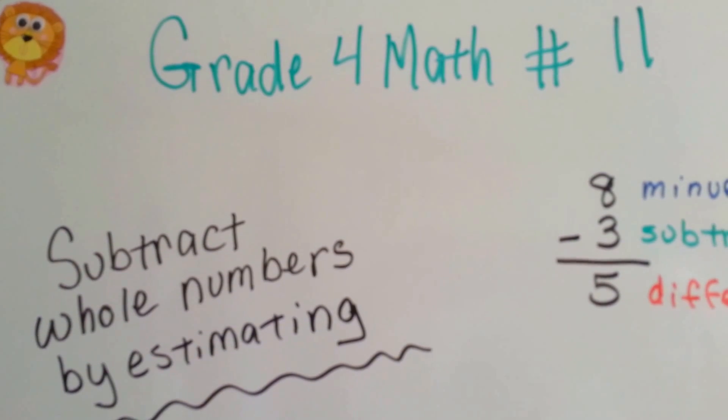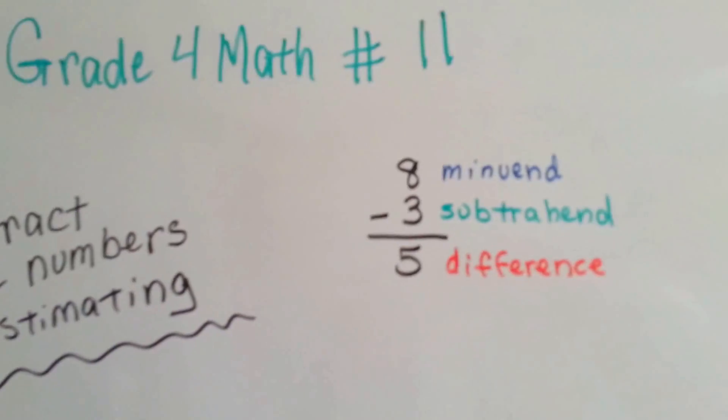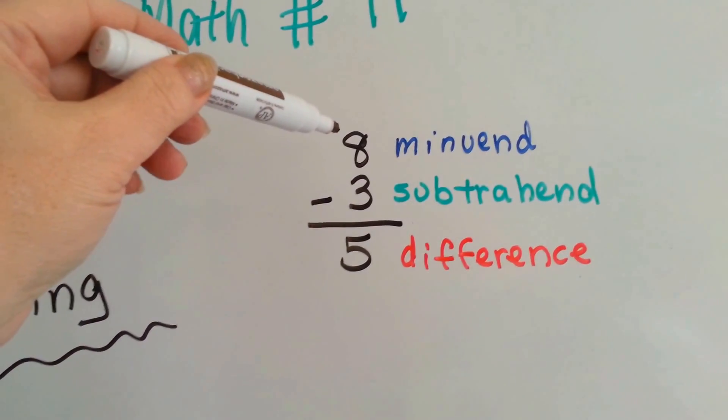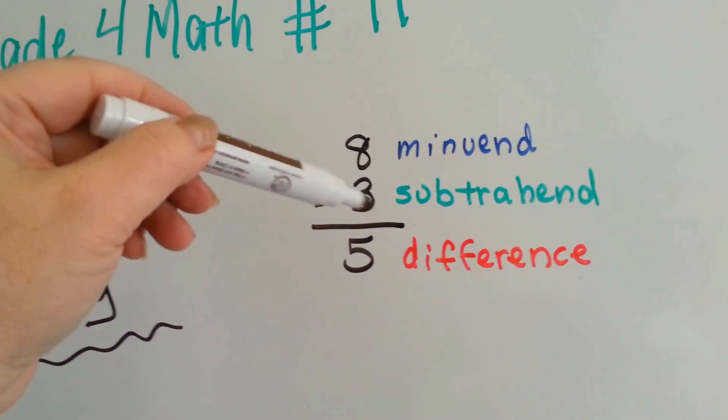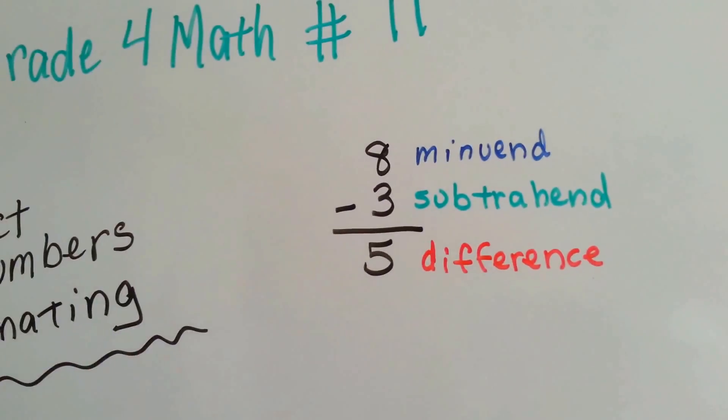Grade 4 math number 11. Subtracting whole numbers by estimating. I just want to do this really quick. I want you to remember that the big number you're subtracting from is the minuend, the number you're taking away is the subtrahend, and the answer is called the difference.